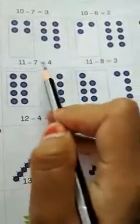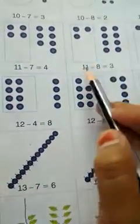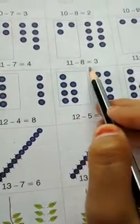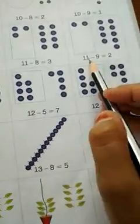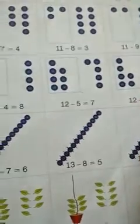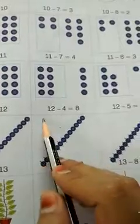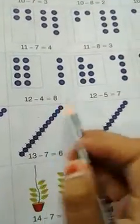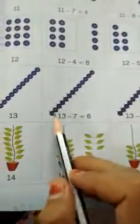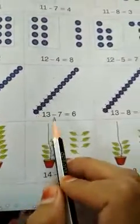From 11, we will subtract 9, so it is equal to 2. From 11, we will subtract 9, so it is equal to 2. Now 13 minus 7.